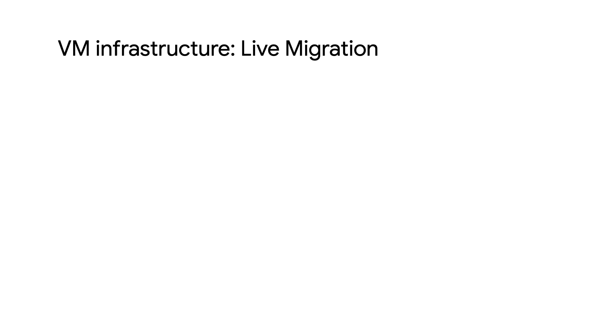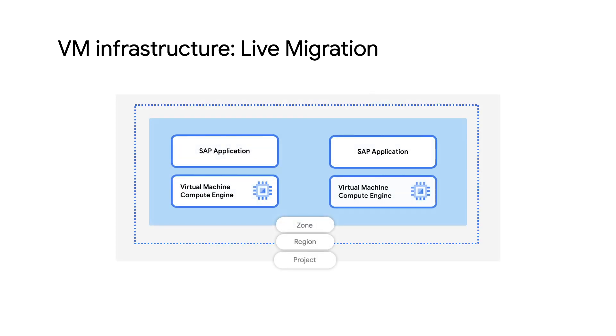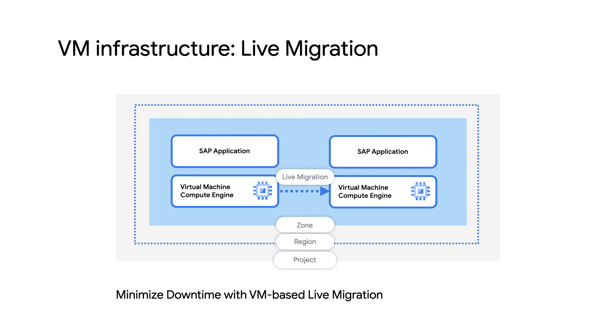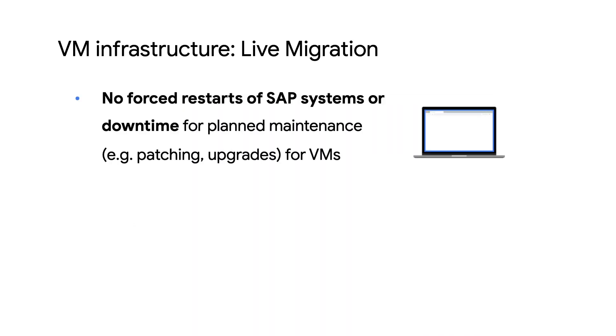Now that we have learned about the different regions and zones, let's look at some features that we can offer thanks to our virtualized infrastructure. When we need to perform maintenance on our infrastructure, Google Compute Engine automatically migrates your instance away from the maintenance event while trying to keep your application running without any downtime. We call this feature live migration.